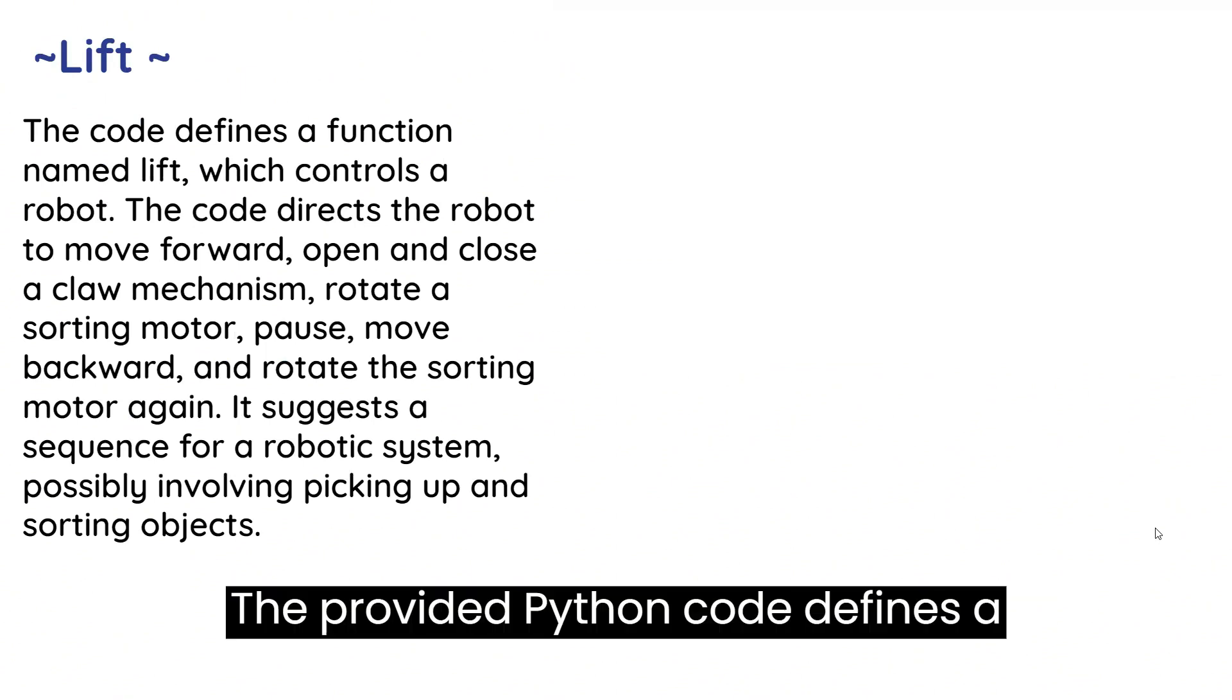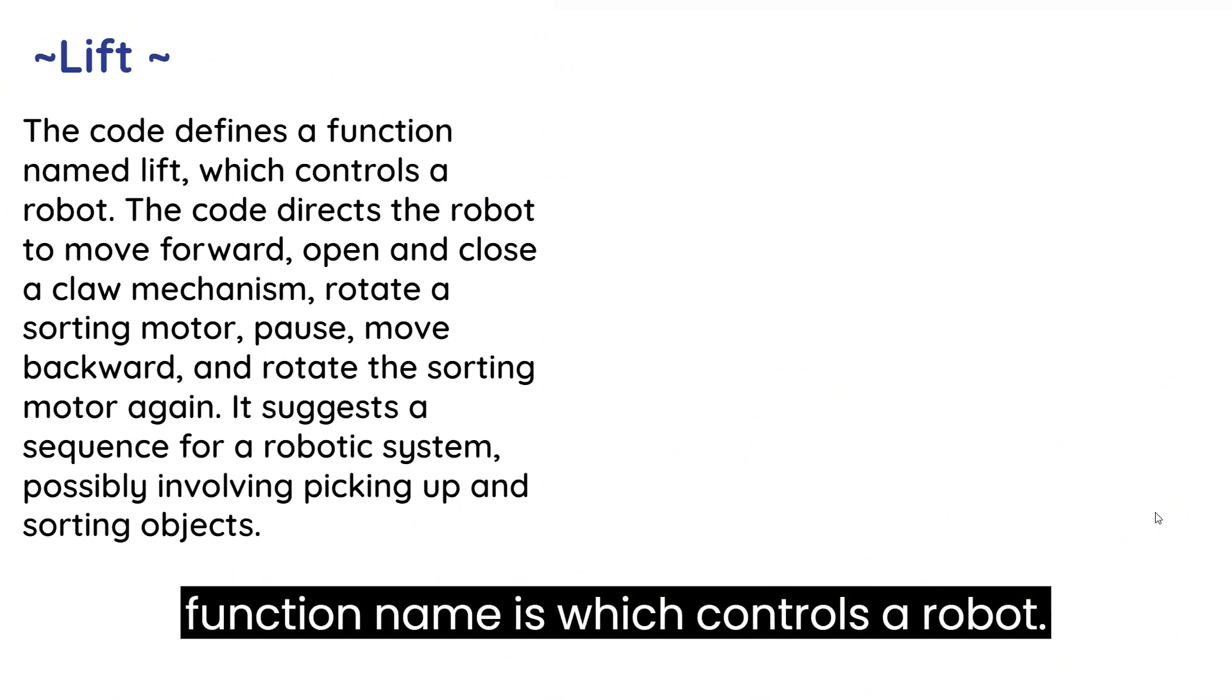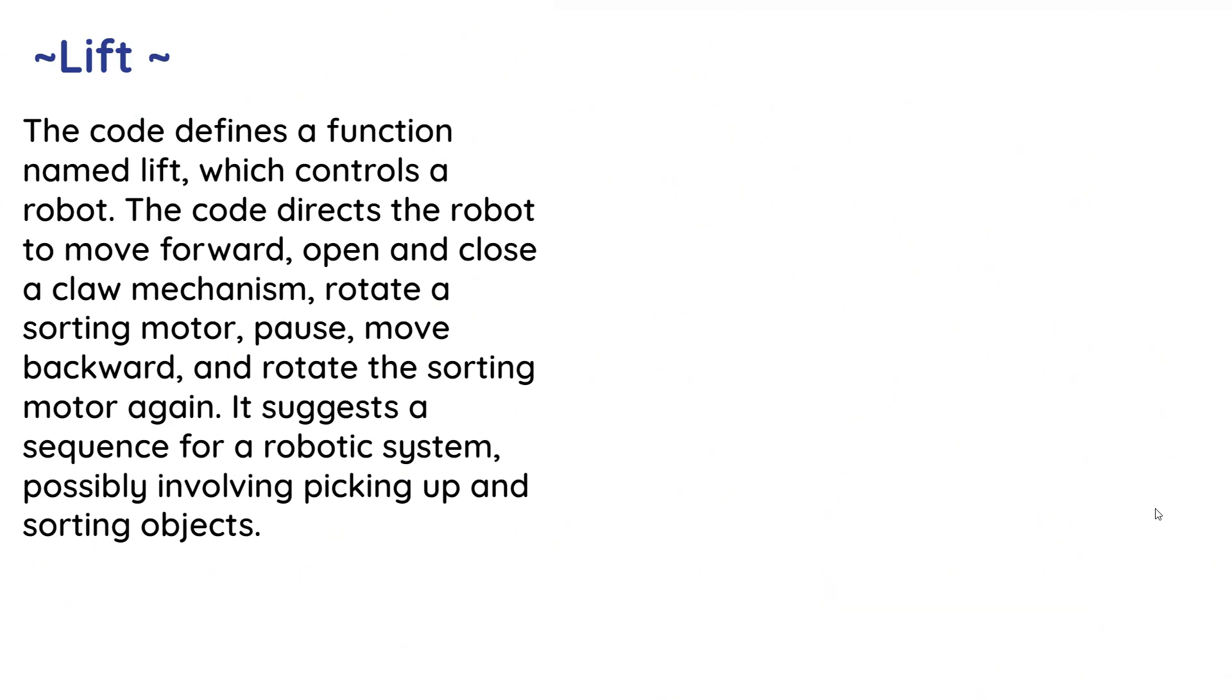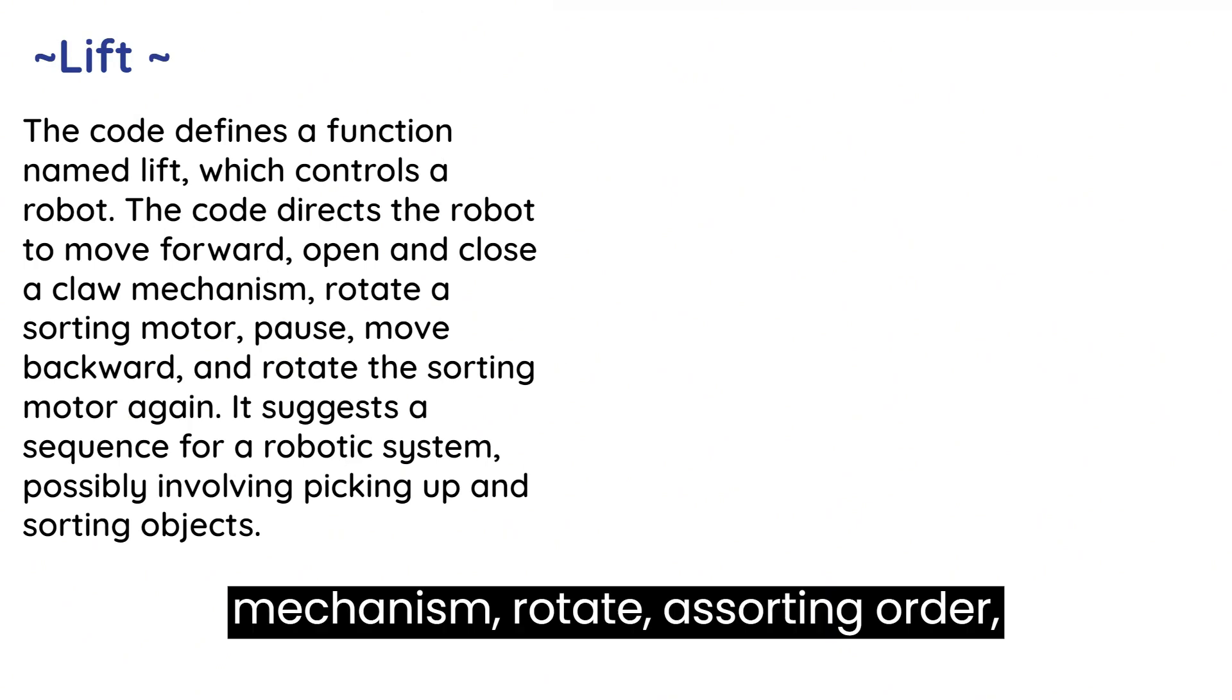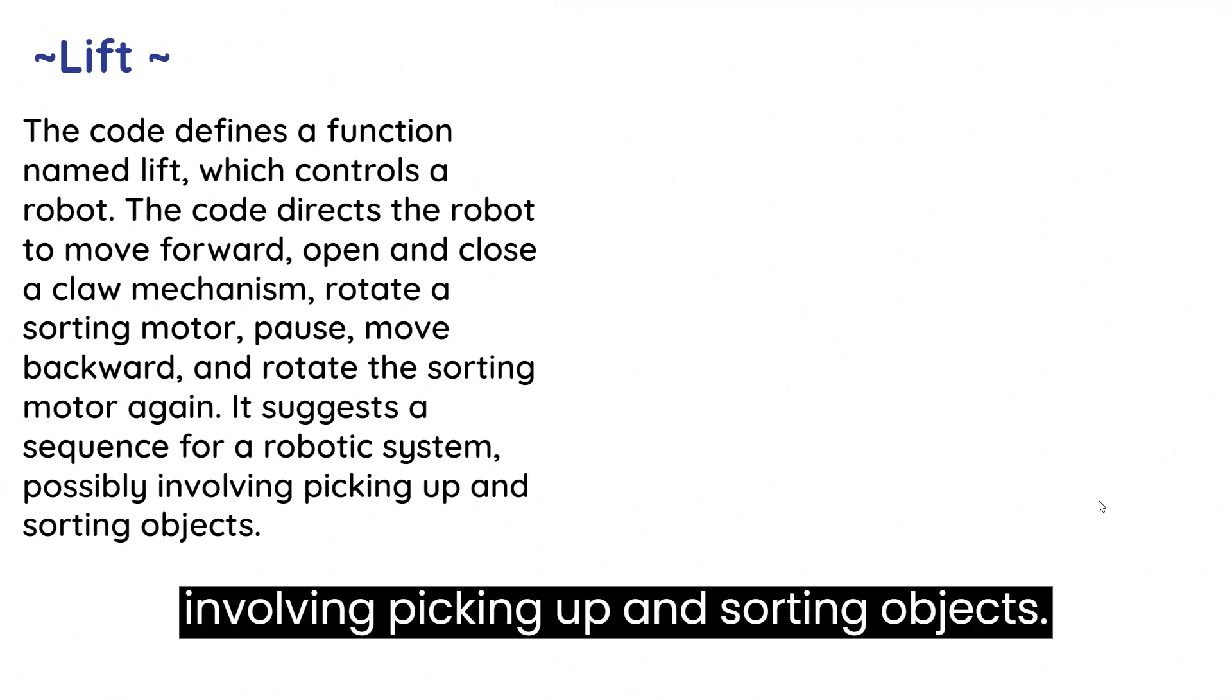The provided Python code defines a function which controls a robot. The code directs the robot to move forward, open and close a claw mechanism, rotate a sorting motor, pause, move backwards, and rotate the sorting motor again. It suggests a sequence for robotic systems, possibly involving picking out and sorting objects.